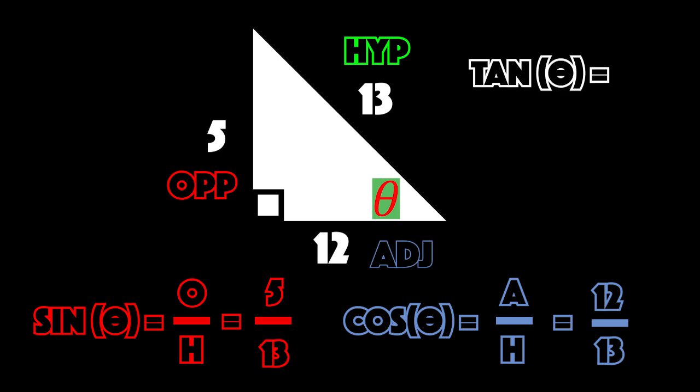Tangent be the TOA, failure I don't know her. O over adjacent, pay attention to the placement. 12 on the bottom, on top is 5. Problem done, next, best, copy, cool, bingo.